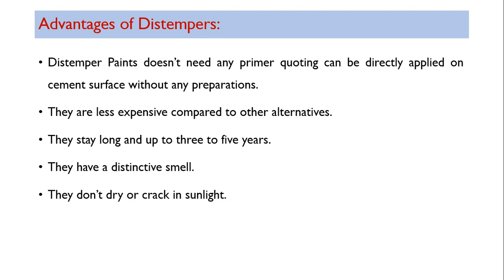Advantages of distemper: distemper paint does not need any primer coating and can be directly applied on cement surfaces. They are less expensive compared to other alternatives and are very economical. They last up to three to five years — the color is well maintained for three years, after which it may start to fade and some scaling may occur. They have a distinctive smell.